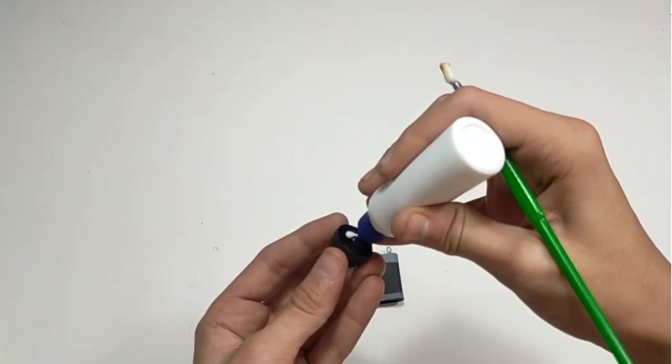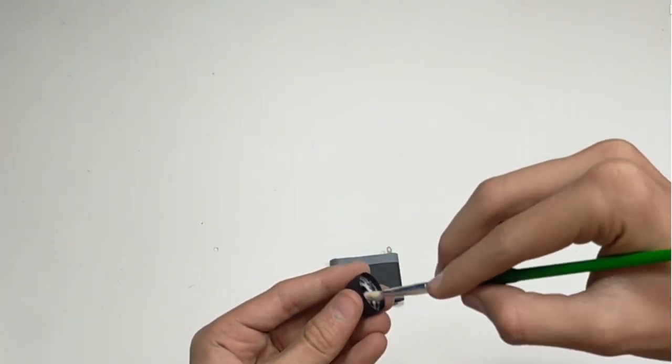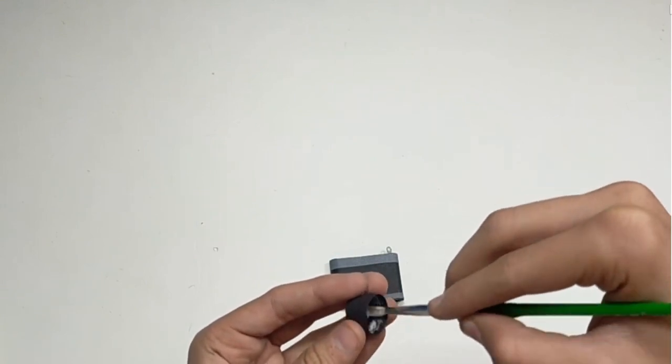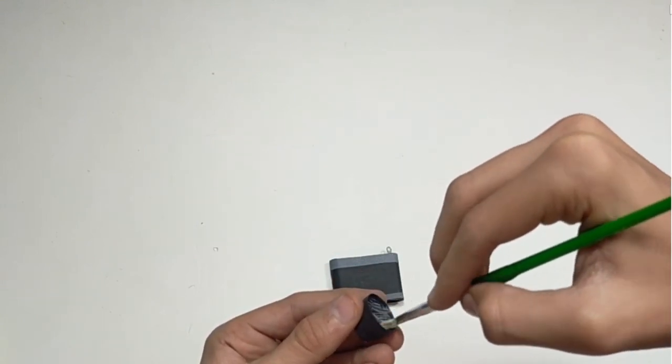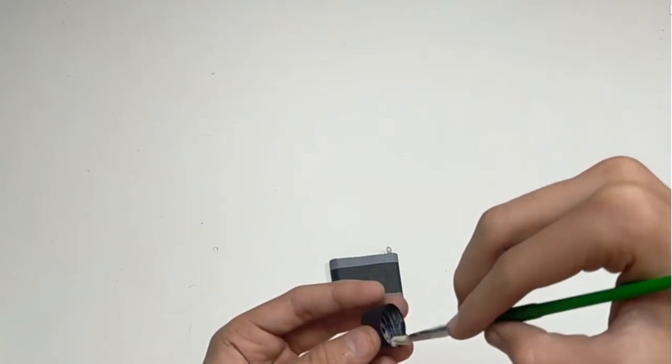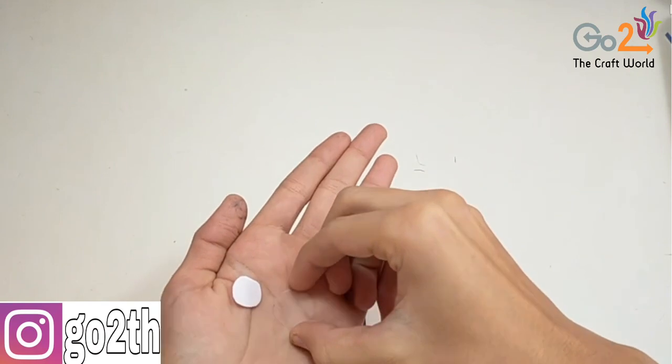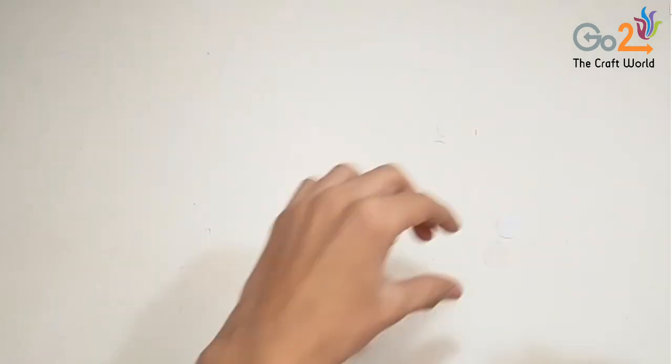Now we will apply the glue and secure the shape. So now we have cut two circles, one from white sheet and one from transparent sheet.